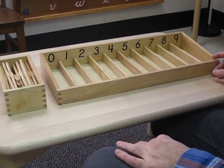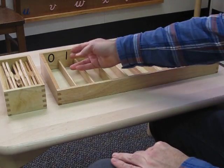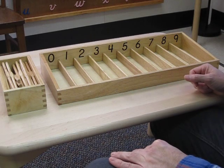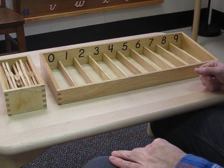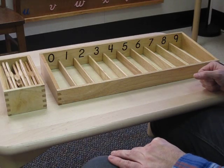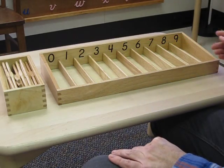Invite the child to do the spindle box. The child should have previous knowledge of the numbers, the numerals and what their names are, and this helps them to learn the quantity. Once again we have a left to right orientation.